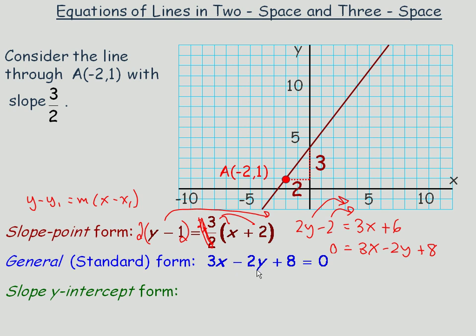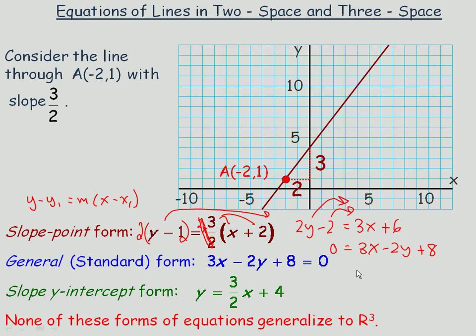If we were to take that and solve for y, we would get y = mx + b form, or slope y-intercept form, y = (3/2)x + 4. You can see the y-intercept is 4. The problem with all three of those forms of equations is that none of them generalize to three-dimensional space, and we eventually want to get there.